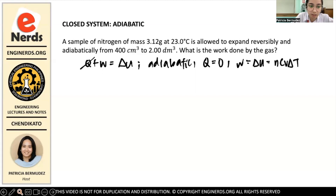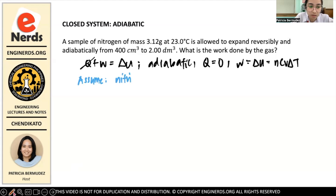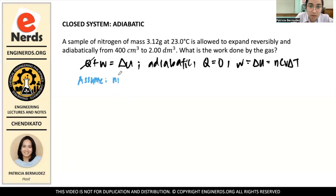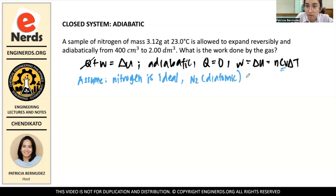We have to assume things first. We cannot use Cv for just any other gas. First, we have to assume that nitrogen is an ideal gas. Nitrogen's formula is N2, which is diatomic, and the Cv for a diatomic gas is 5/2 R.